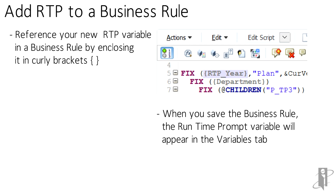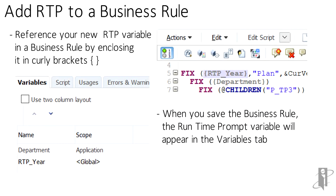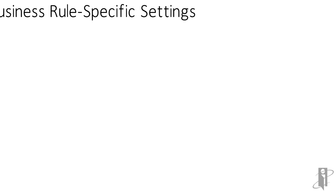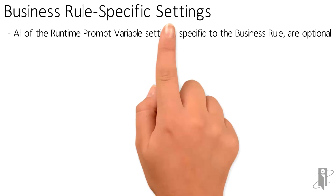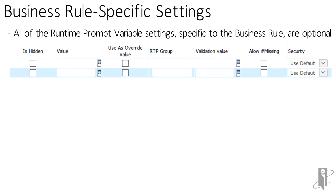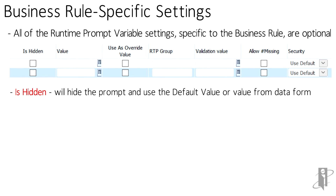Once saved, the variable will appear in the business rule's listing of variables. The variable will appear with a list of settings or parameters that apply specifically to the business rule. All of the settings can be left blank to get the basic runtime prompt functionality. Options include IsHidden, which will hide the prompt from the user and use the default value or value from a data form; and Value, which is a stored value specific to the rule as opposed to one used in the variable design.